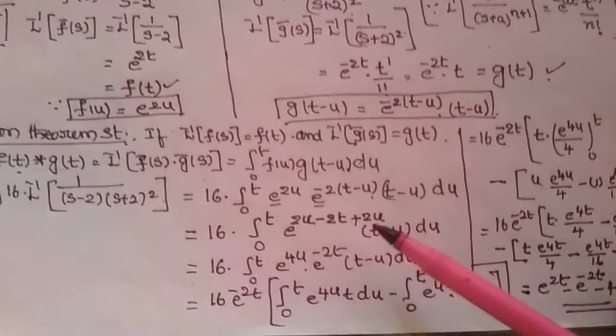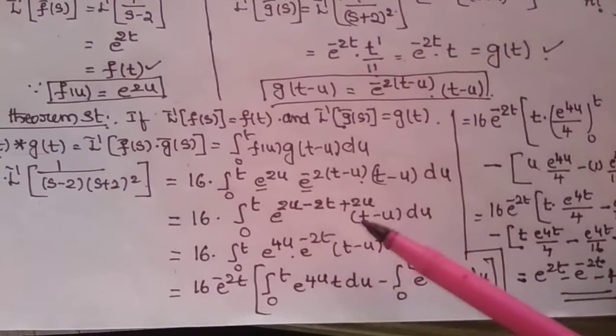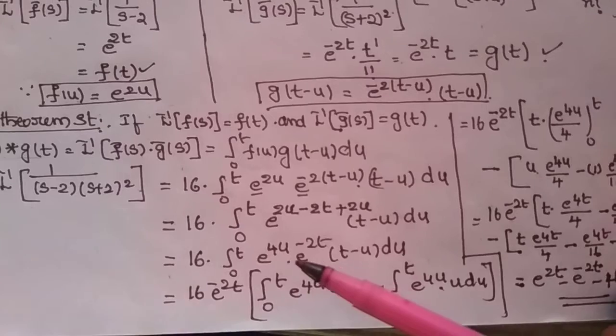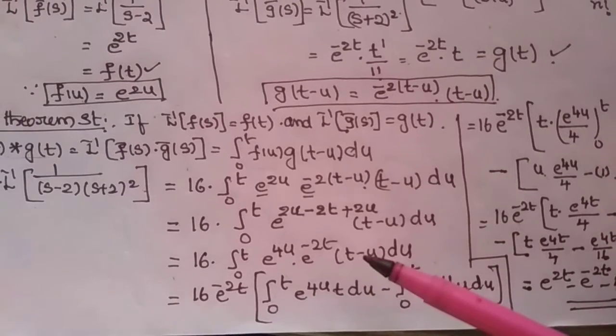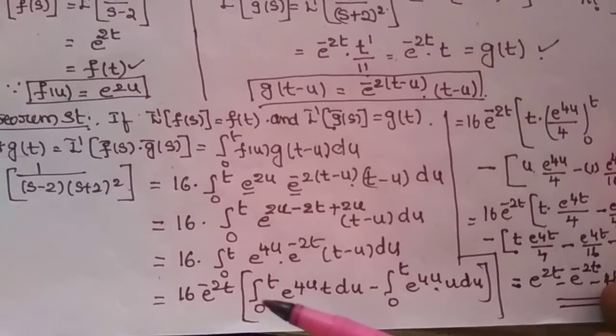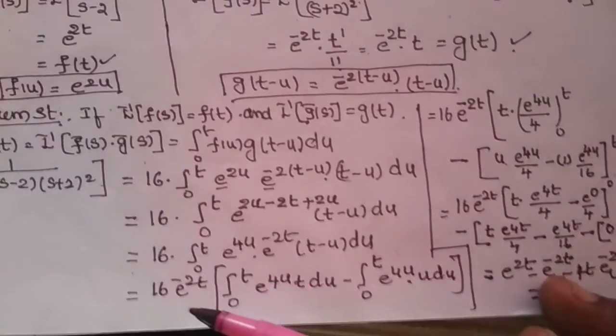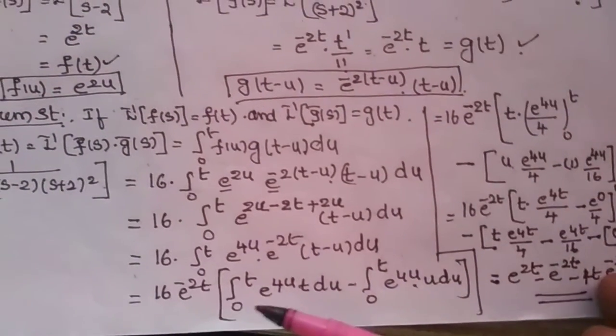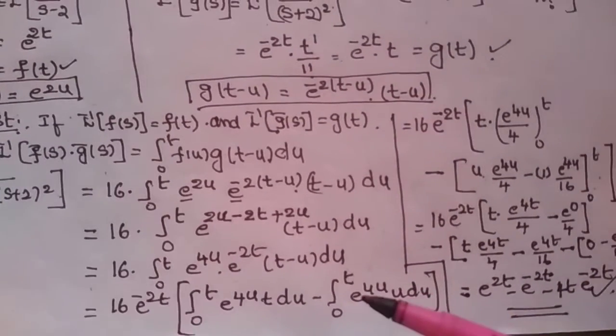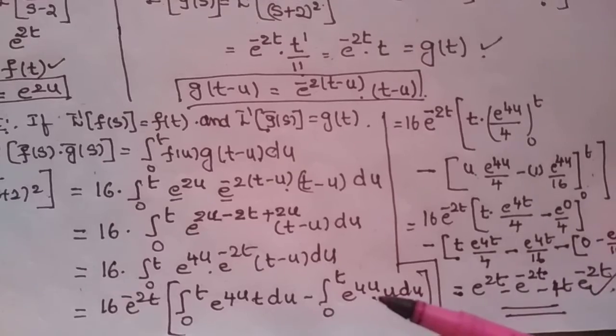So, the bases are equal, powers are adding. So, then 16 into integral 0 to t e power, this is the simplification e power 4u into e power minus 2t into t minus u du. Then e power minus 2t is constant, that is why I have written 16 into e power minus 2t, then integral 0 to t e power 4u into t du, e integral 0 to t e power 4u into du.